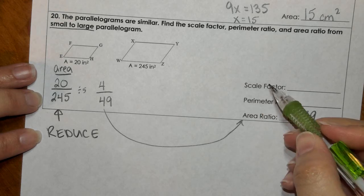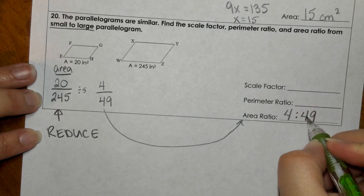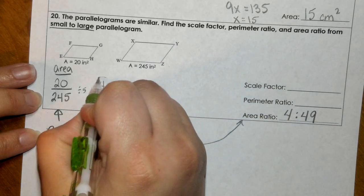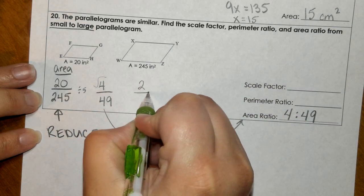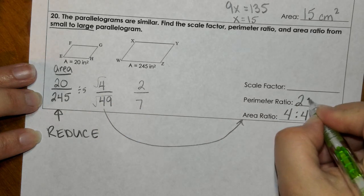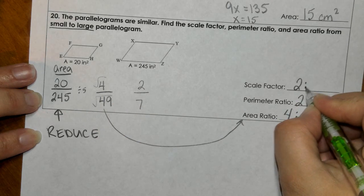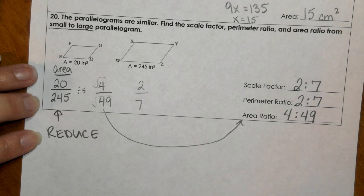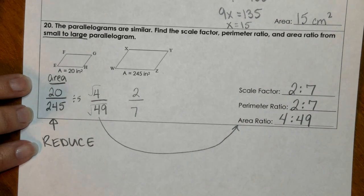So before I do that, that right there is the area ratio. To get to perimeter and scale factor, I'm square rooting both of these. So if I square root that, I get 2. If I square root 49, I get 7. So 2/7ths are the scale factor and the perimeter ratio. And that's it.